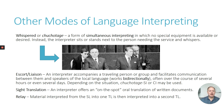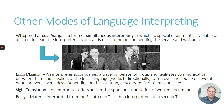There are a couple of other related modes. One is whispered interpreting, or chuchotage, pictured here with interpreters leaning over the shoulders of two politicians — believed to be Mikhail Gorbachev and Ronald Reagan. It's a form of simultaneous interpreting in which no special equipment is available or desired; instead, the interpreter sits or stands next to the person needing the service and whispers. Another fairly common type is escort or liaison interpreting, where the interpreter accompanies a traveling person or group and facilitates communication between them and speakers of the local language, usually working bidirectionally.